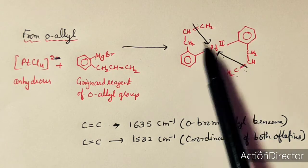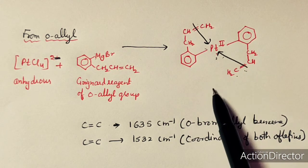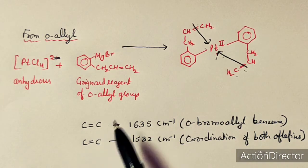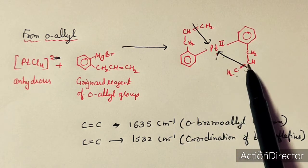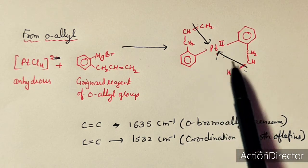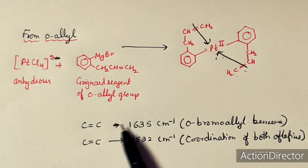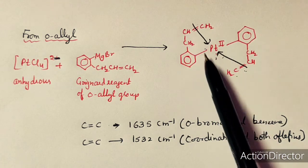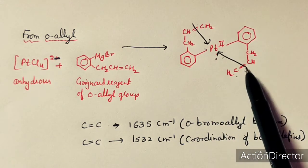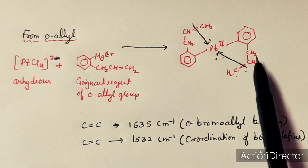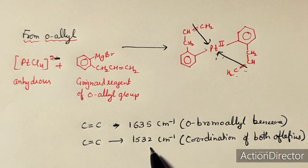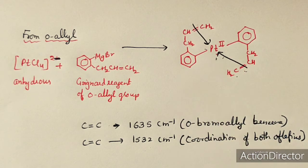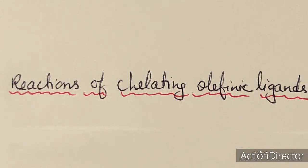If no coordination of the double bond with the metal atom takes place, the frequency appears near 1635 cm⁻¹. If coordination is occurring through the olefinic double bond, the frequency reduces to 1532 cm⁻¹, indicating bonding through the olefin groups.